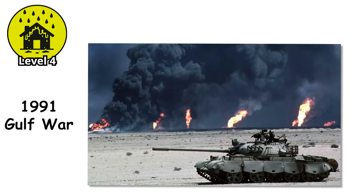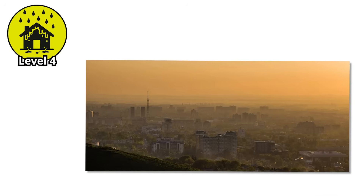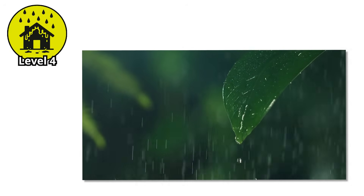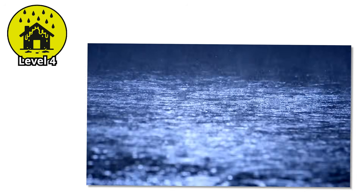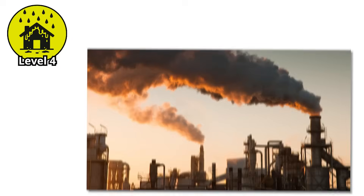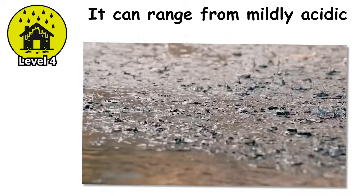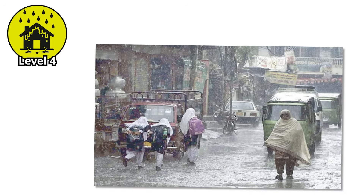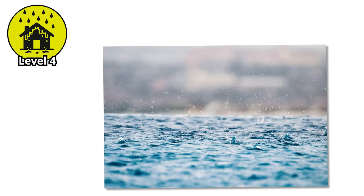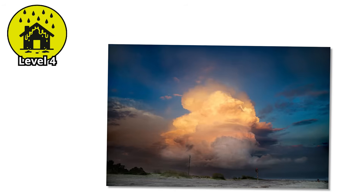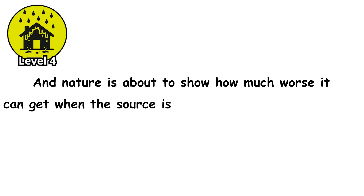Another case unfolded during the 1991 Gulf War, when retreating forces set fire to hundreds of Kuwaiti oil wells. The sky went black. Soot and sulfur rolled over neighboring countries. Rainfall during this period tested as highly acidic, in some cases nearing the pH of battery acid. People described droplets that left stains on cars, irritated nostrils, and made open water shimmer with oily films. Industrial fallout rain is unpredictable — it can range from mildly acidic to directly harmful depending on what burned, what leaked, or what evaporated into the clouds.